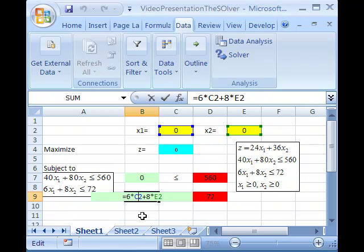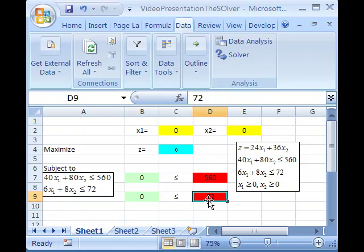Down here, I have written in cell B9, I wrote the left side of the inequality, which was 6 times c2 plus 8 times e2. And over here, I put the 72, which represents the right side of the inequality.